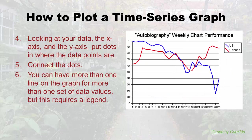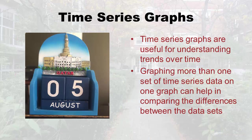You can also have more than one line on the graph for more than one set of data values. Here they're comparing book performance sold in the US versus Canada — you just have to make sure you have a legend so people can tell the lines apart. To summarize, time series graphs are useful for understanding trends over time, like whether things go up or down, and graphing more than one set on one graph helps in comparing differences between data sets.